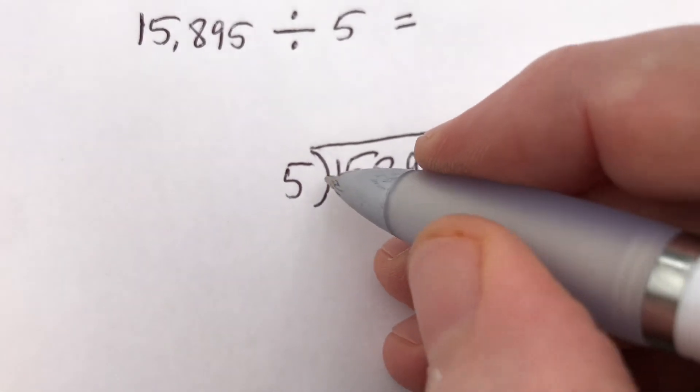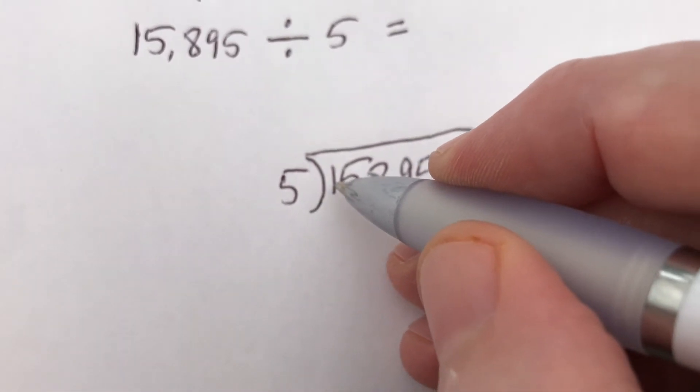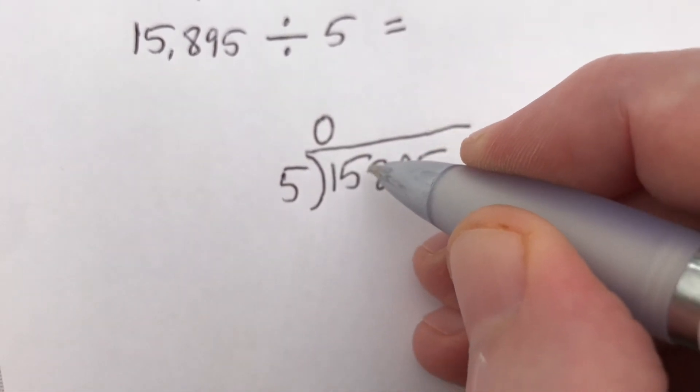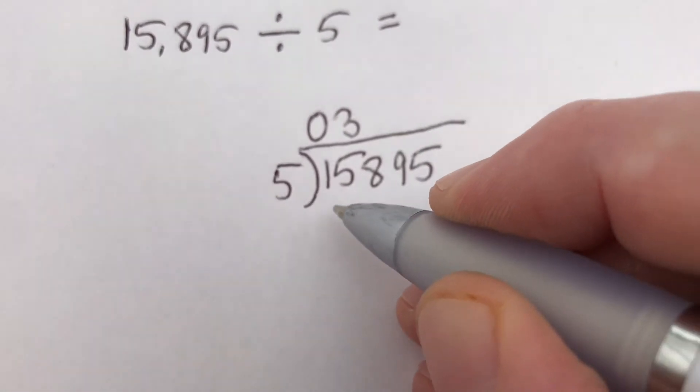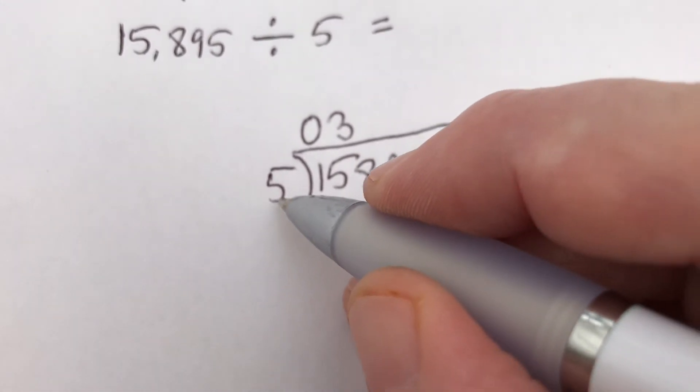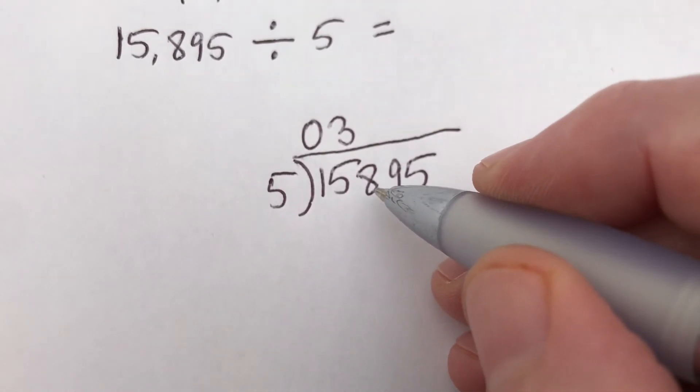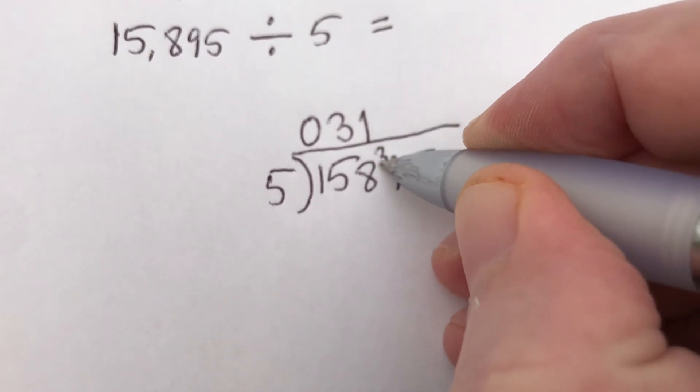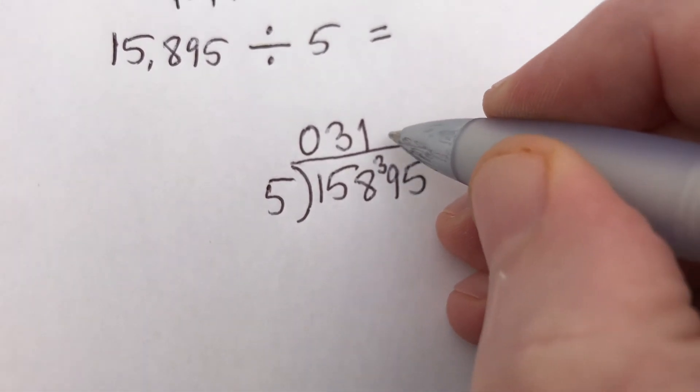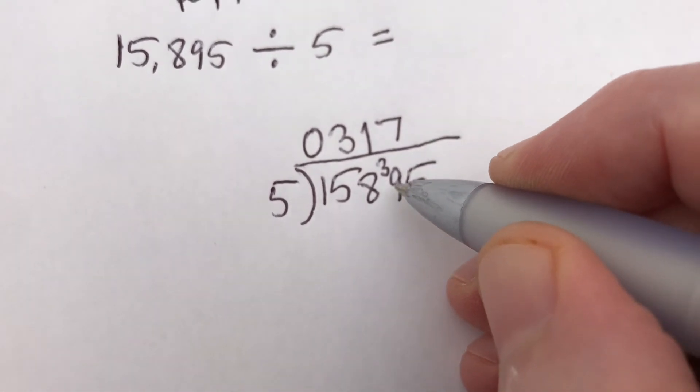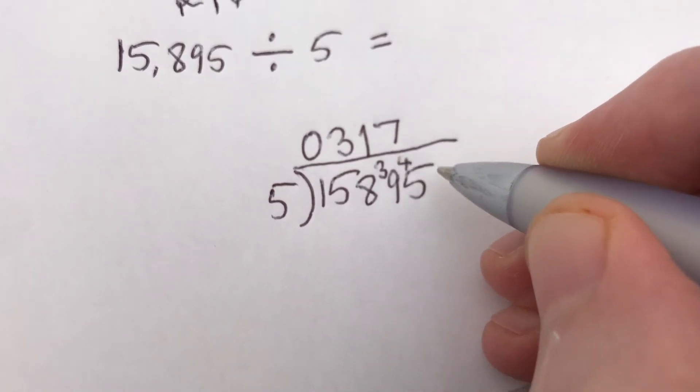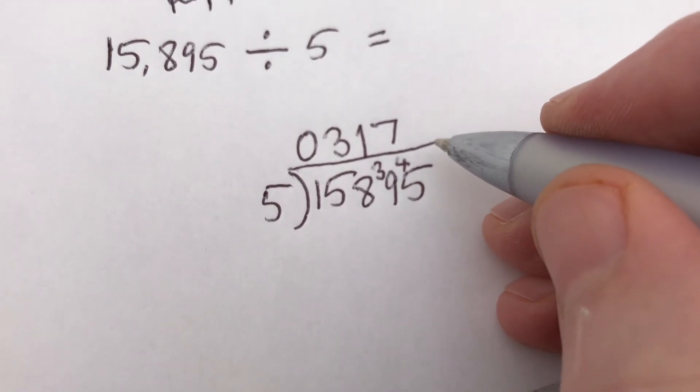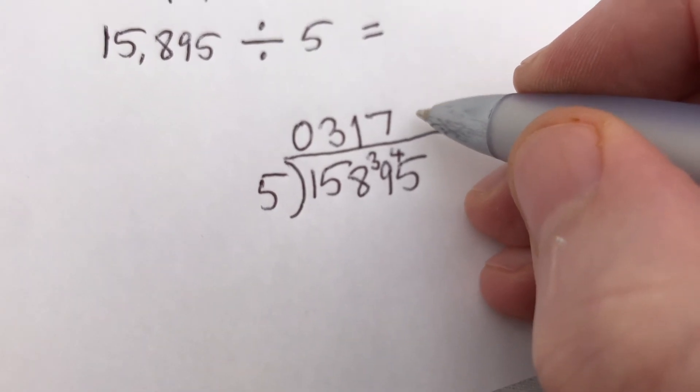So working from the other direction now. 5 into 1 won't go. 5 into 15 will go 3 times, and nothing left over. 5 into 8 goes once, with 3 left over. 5 into 39 goes 7 times, gives us 35, so there's 4 left over. So we carry the 4 into the next unit. 5 into 45 goes 9 times.